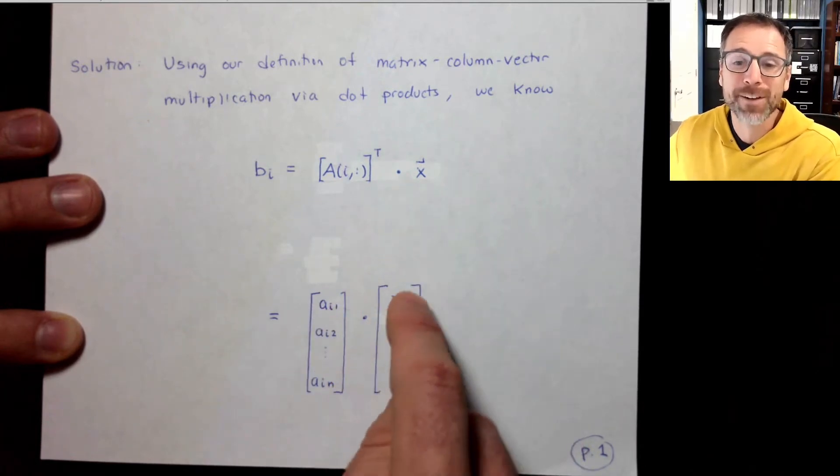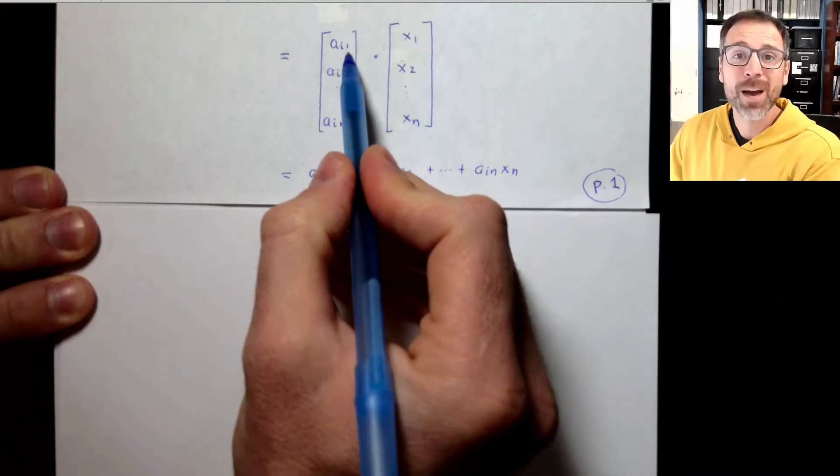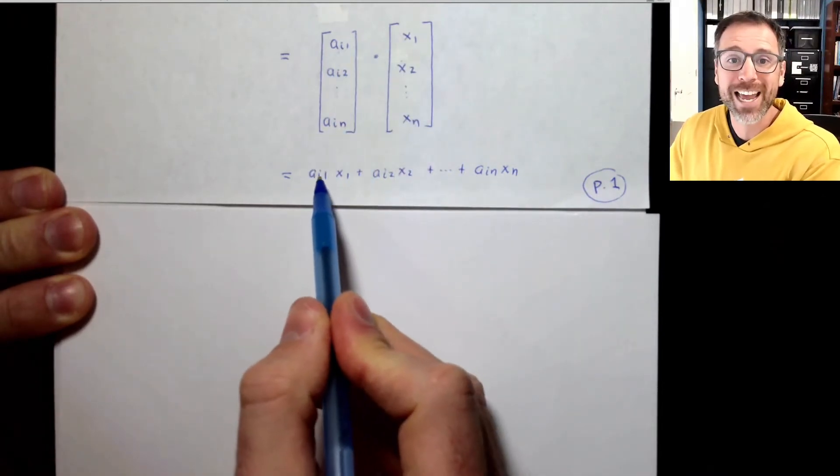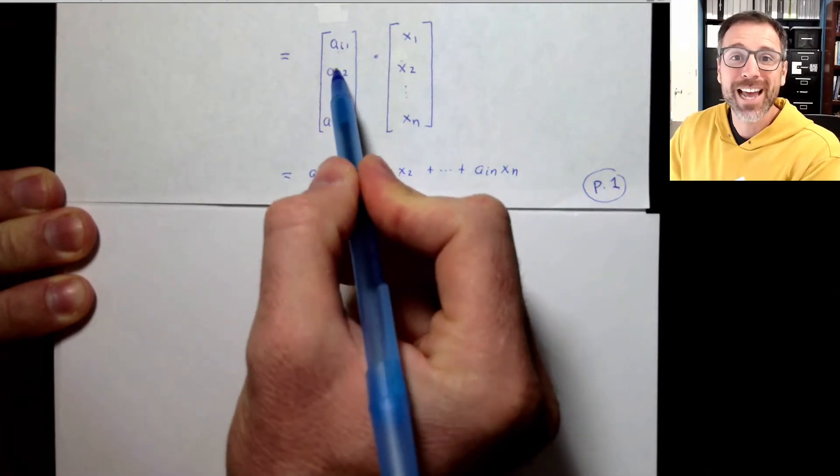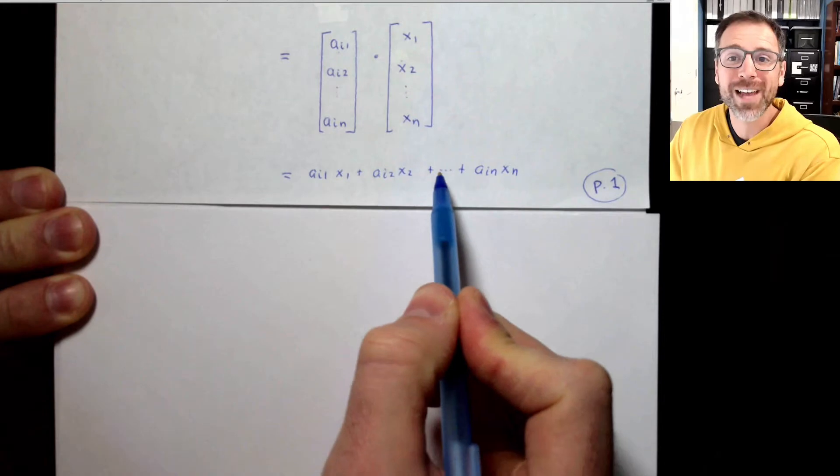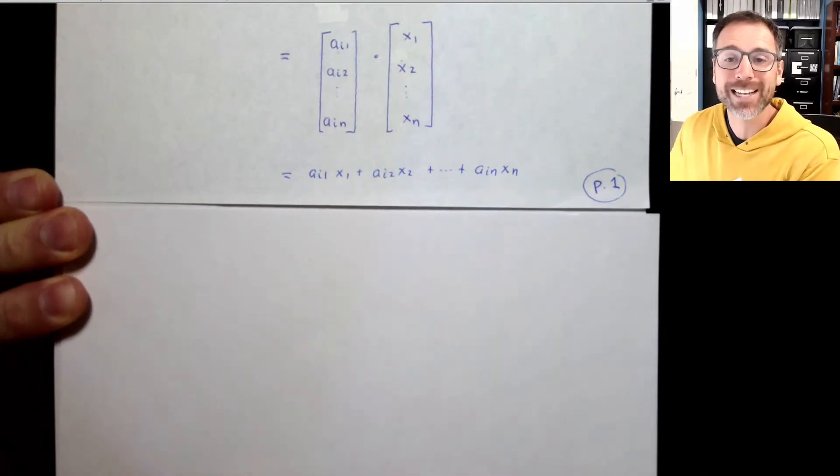X, by definition, is going to be N by 1. When we find the output of the dot product, we take the first entry multiplied by the first entry, that's A_i1 times X_1, plus second entry multiplied by second entry, A_i2 X_2, all the way to the last entry, A_iN times X_N.